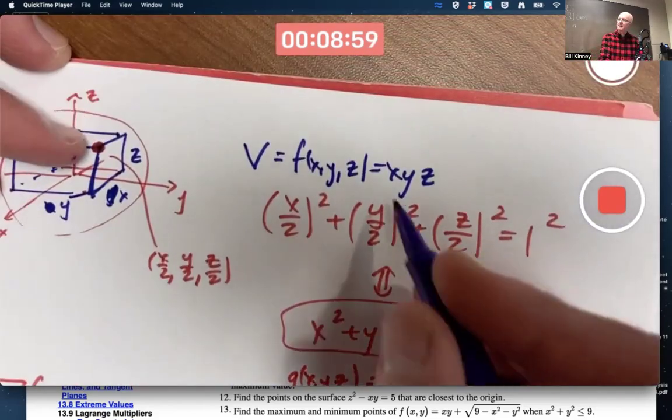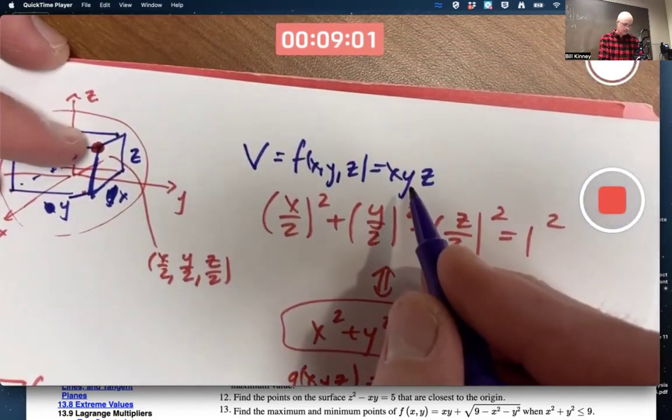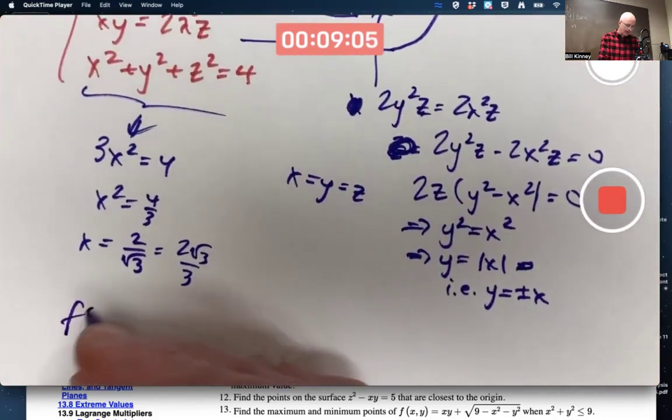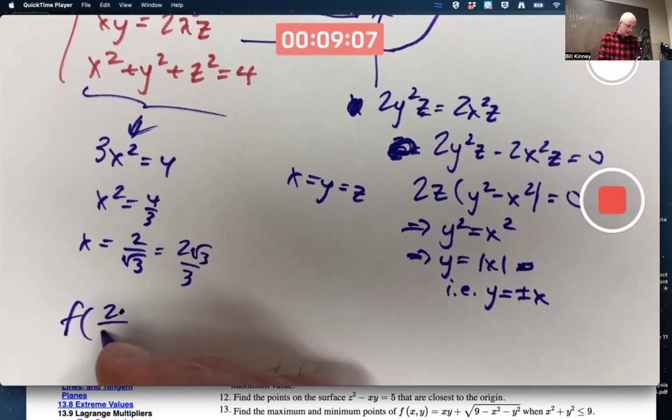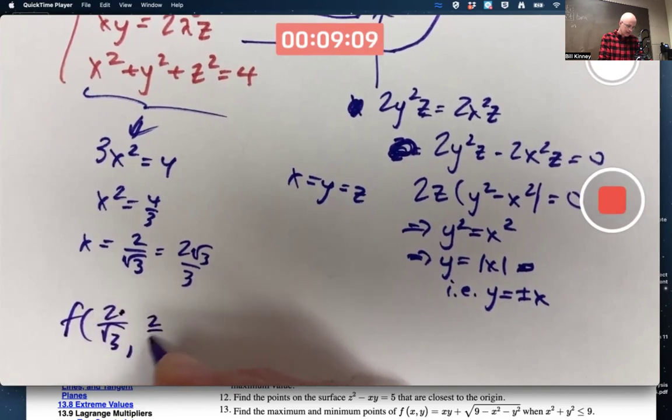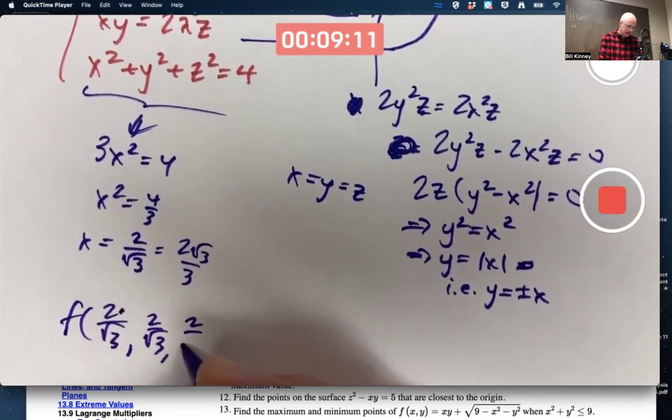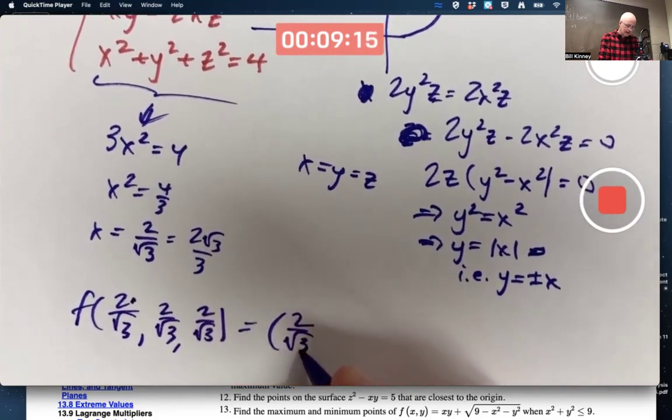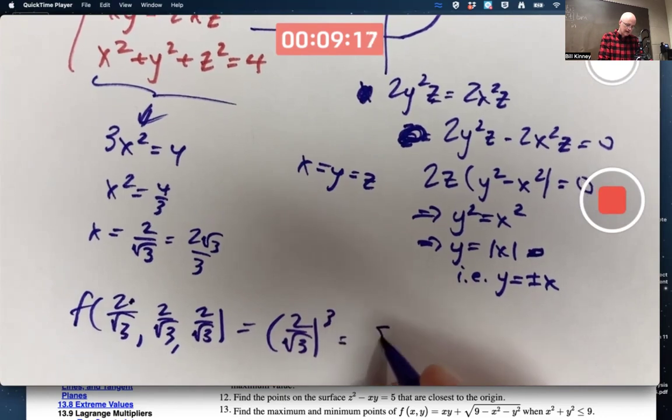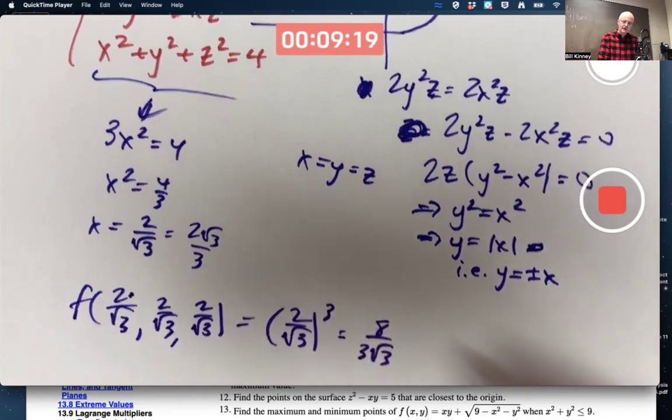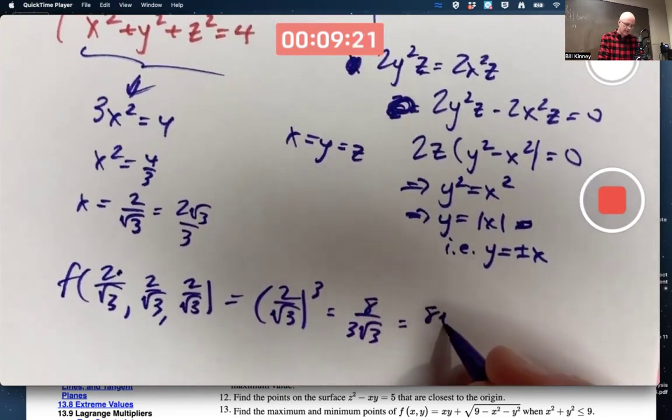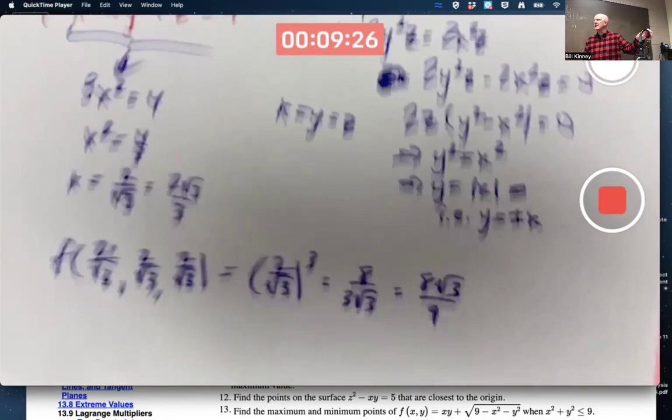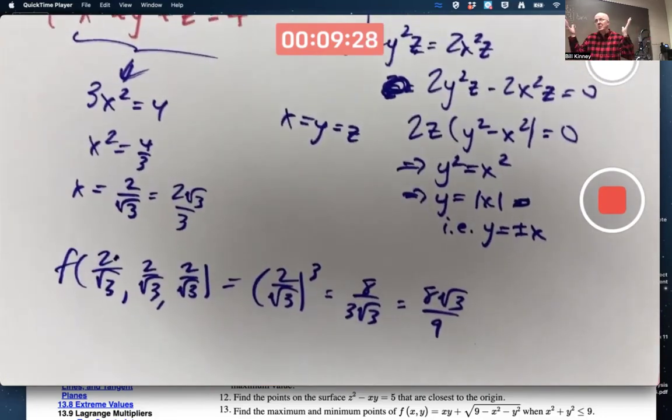You can plug them all in here and find the maximum volume. You'll get, in fact, let's do it as 2 over root 3. Plug them all in. So you're cubing that thing. Looks like this is the maximum volume. And X, Y, and Z are all the same. So it is a cube.